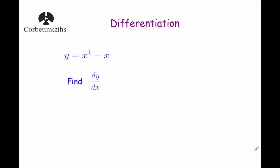Our last example: y equals x to the power of 4 minus x. To find dy by dx, we differentiate each term separately. Differentiating x to the power of 4: bring the 4 down giving 4x cubed. Differentiating minus x, which is minus 1x, gives minus 1. So if y equals x to the power of 4 minus x, dy by dx equals 4x cubed minus 1.